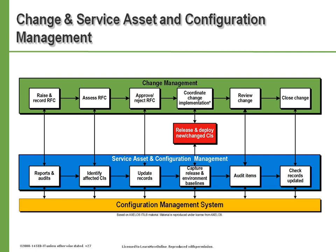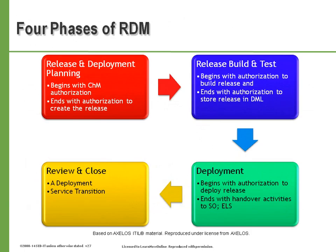In closing our process review, we will go over the CSI process, which is the seven-step improvement process. This process defines and manages the steps required to identify and implement improvements.